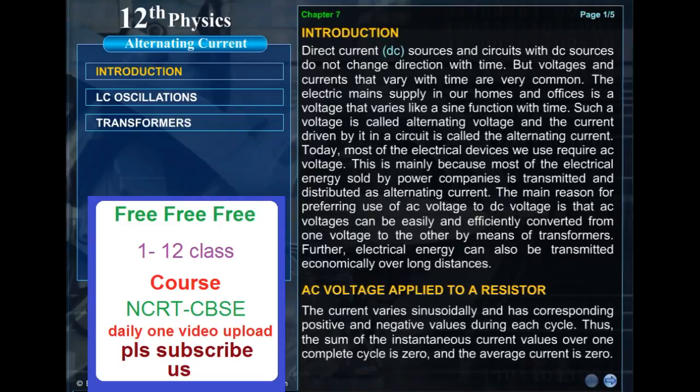AC voltage applied to a resistor. The current varies sinusoidally and has corresponding positive and negative values during each cycle. Thus, the sum of the instantaneous current values over one complete cycle is zero and the average current is zero.